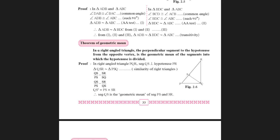If we have right angle triangle PQR with altitude QS perpendicular to hypotenuse PR, we need to prove QS squared equals PS times SR. From the similarity of right angle triangles proved earlier, triangle QSR is similar to triangle PSQ. Writing the sides in proportion: QS by PS equals SR by SQ. Cross-multiplying gives QS squared equals PS times SR. So QS is the geometric mean of PS and SR.